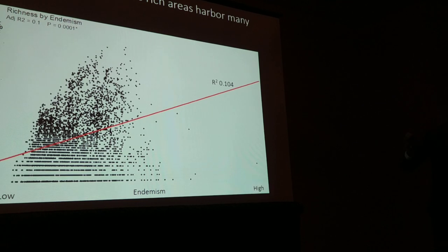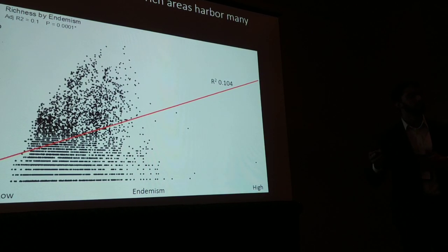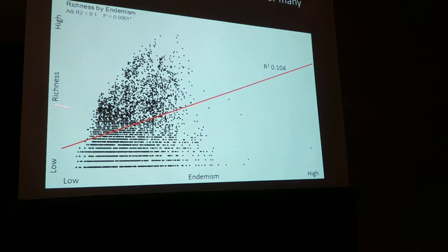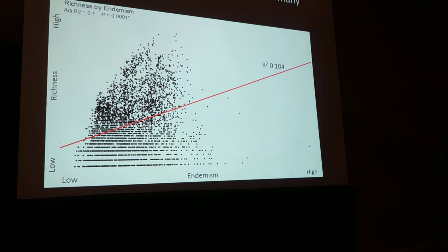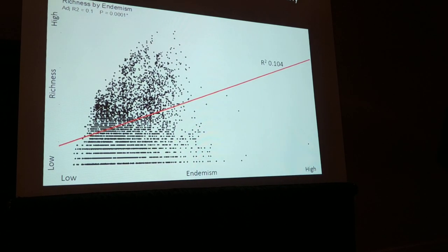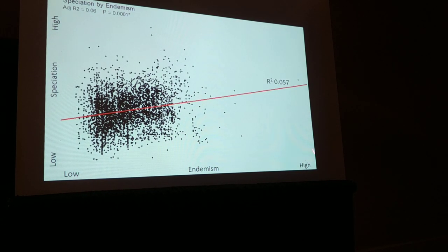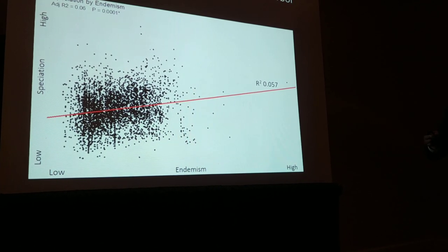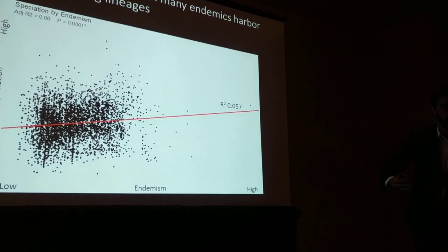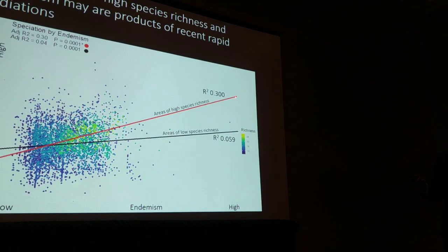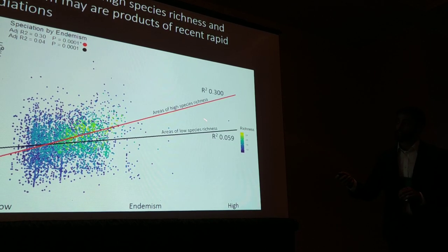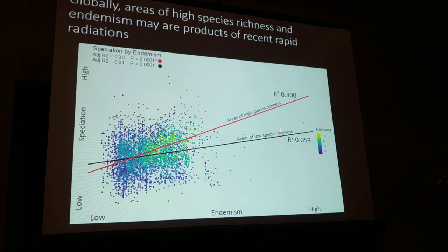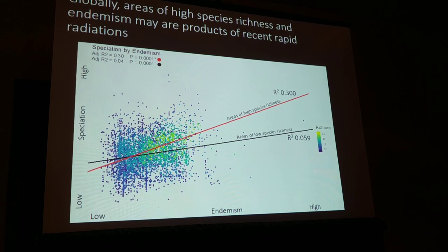This map gave us a framework for exploring the data in a more quantitative way. We extracted species richness, endemism, and mean speciation rates for each grid square. On a global scale, areas that harbor high species richness don't necessarily harbor many endemics—perhaps due to the distribution of many widespread species. Similarly, areas that harbor many endemics don't necessarily harbor rapidly radiating lineages, perhaps due to relictual endemics not rapidly radiating—a museum hypothesis. Although, if we parse out the data and look at areas of high species richness and high endemism together, you tend to harbor rapidly radiating lineages. So globally, areas of high species richness and high endemism are probably products of recent rapid radiations, or cradles.